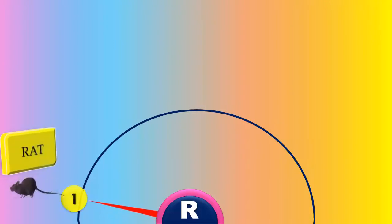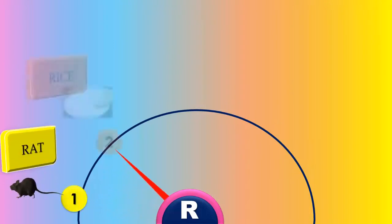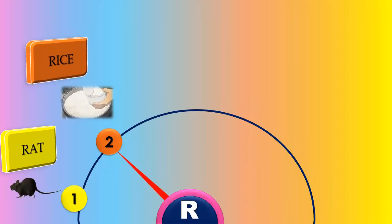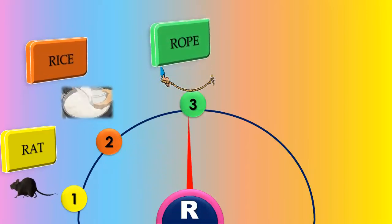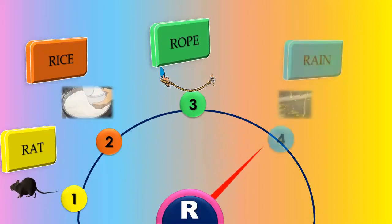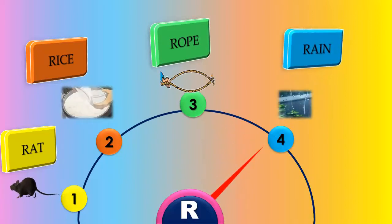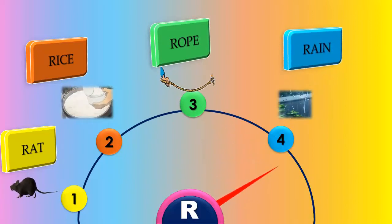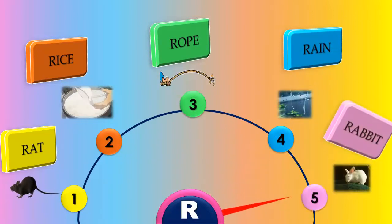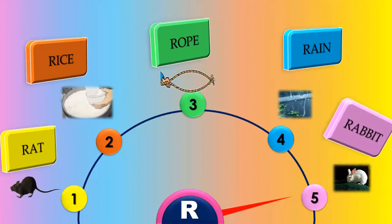Kids, let's revise the letter R: R as in rat, R as in rice, R as in rope, R as in rain, R as in rabbit.